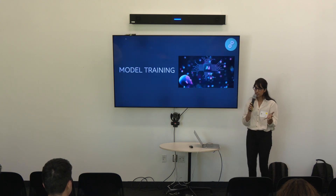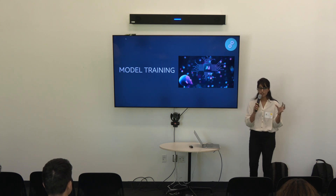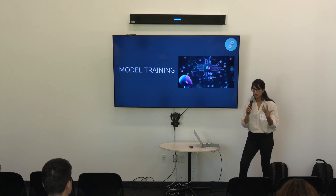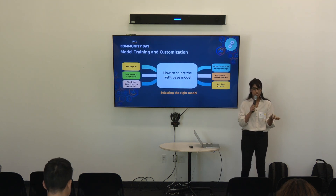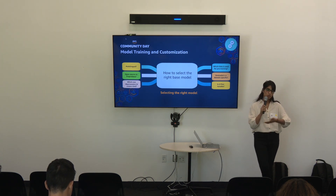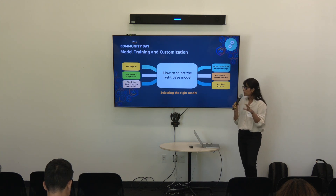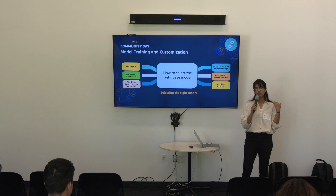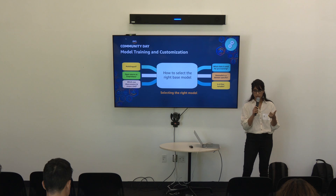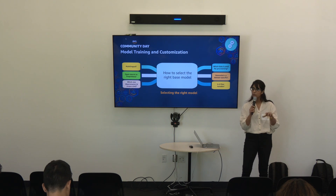Now we're at the model training phase. We know we have a Gen AI problem, so now we go into the model training or model usage stage. The first thing is selecting a model. There are something like 100,000 models out there now. What we've typically seen is that people pick a model and then try to fit it to the use case, requiring a lot of fine-tuning and customization that uses up significant computational resources, time, and money.